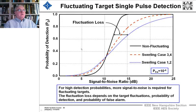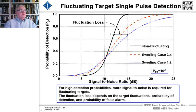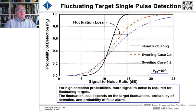After looking at how we calculate the probability of detection versus signal-to-noise ratio for a single pulse and seeing what that algebra is, let's plot out and look at what it looks like for a few cases. In black is the non-fluctuating model, in red is case 3 and 4, and blue dots is Swerling case 1 and 2. This is all for a probability of false alarm of 10 to the minus 6. For single pulse detection, Swerling cases 3 and 4 become the same, and 1 and 2 become the same.